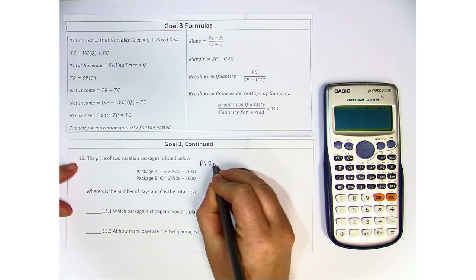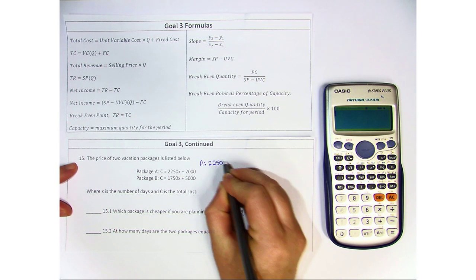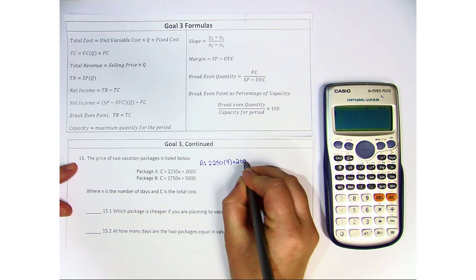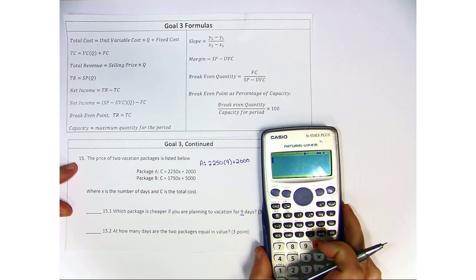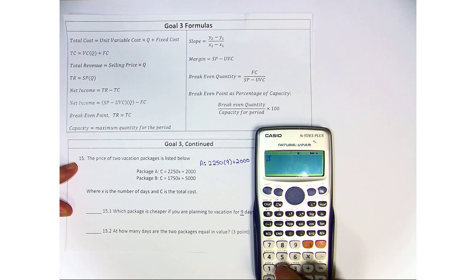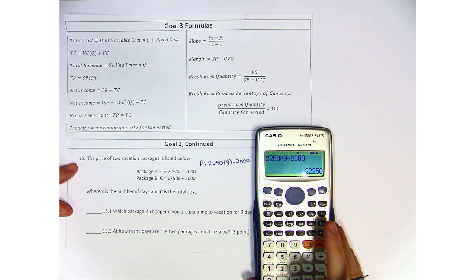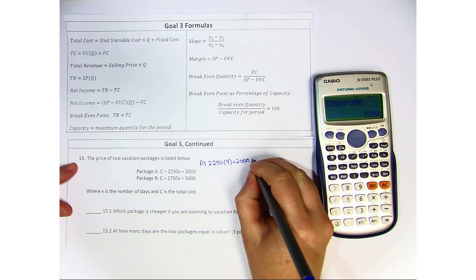Package A is 2250, and we're going to multiply by 9 plus 2000. We grab our calculator to go ahead and do that, 2250 times 9 plus 2000. And we get that a total cost would be 22,250.